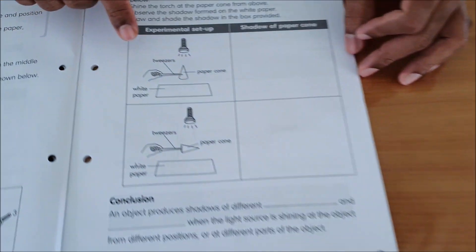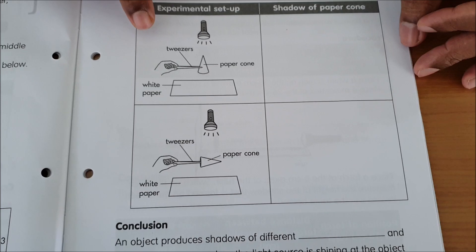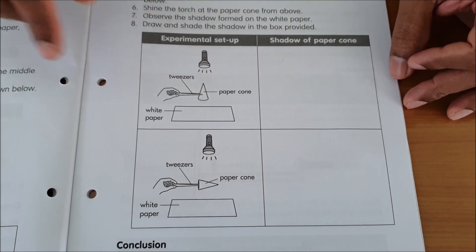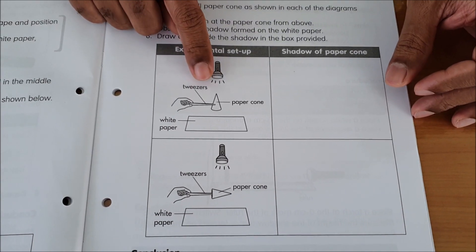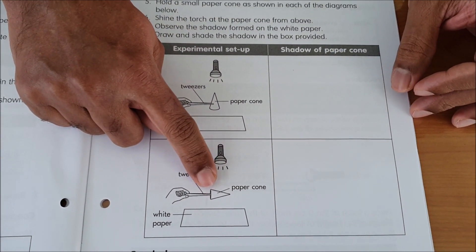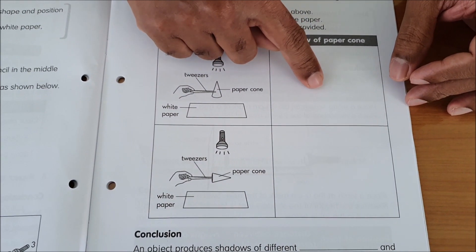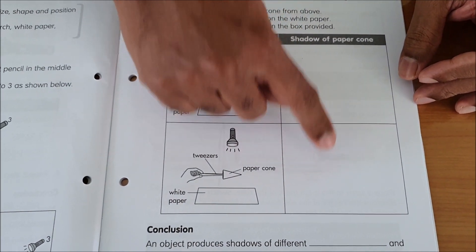Okay, it's very fun. So we are going to look at a conical shape object from the top, the torchlight shining on the top and torchlight shining at the side. And we are going to draw the shape of the shadow formed at this space over here.